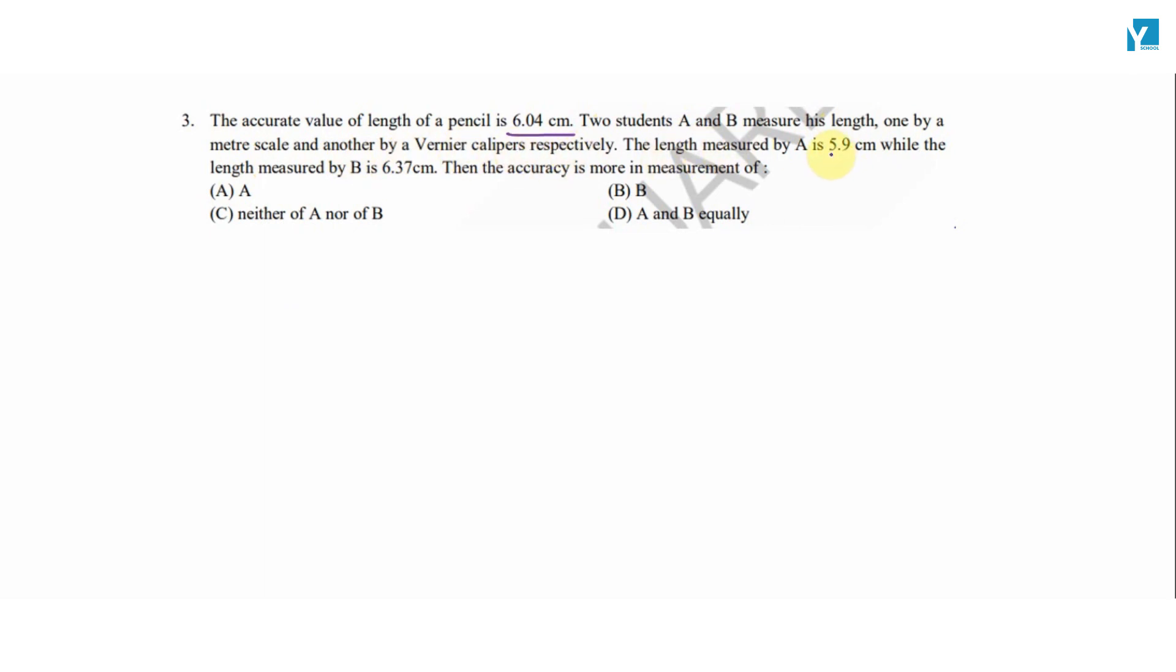The length measured by A is 5.9 cm while the length measured by B is 6.35 cm. Then the accuracy is more in the measurement.